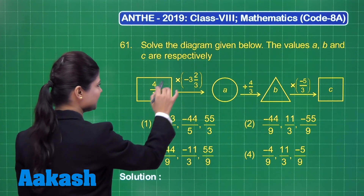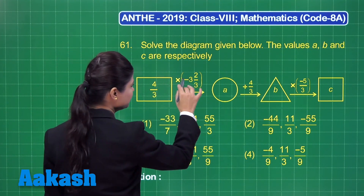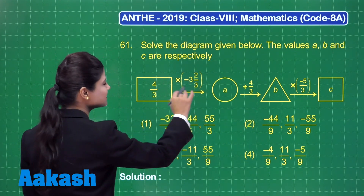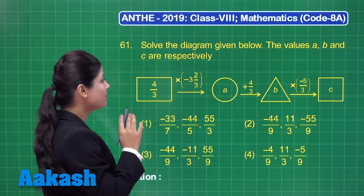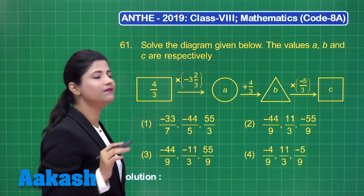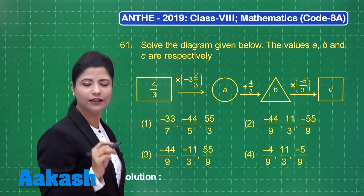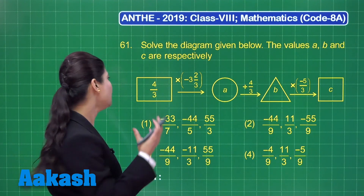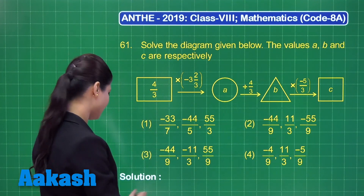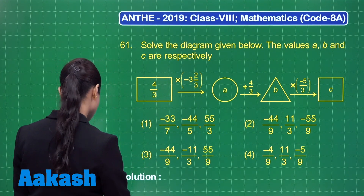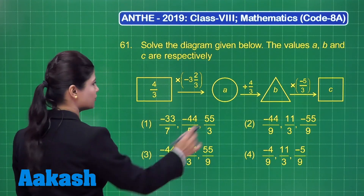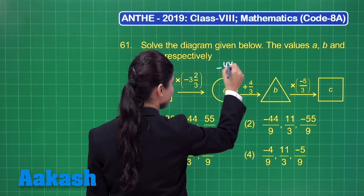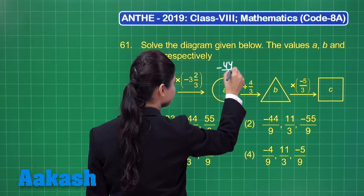First, 4 upon 3 is multiplied with minus 3 and 2 upon 3. This simplifies to the value minus 11 upon 3. So when you multiply 4 upon 3 by minus 11 upon 3, you get the product as minus 44 upon 9.